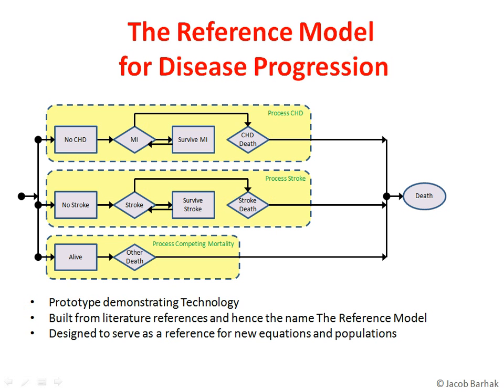It's built from literature references, and hence the name — the reference model. It's also called the reference model because it's designed to serve as a reference for new equations, new models, to test on new population sets. It's currently composed of three main processes: heart disease, stroke, and mortality.